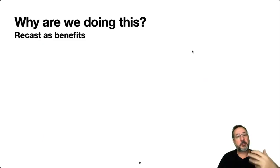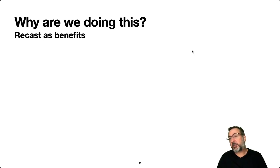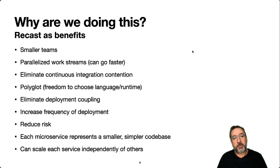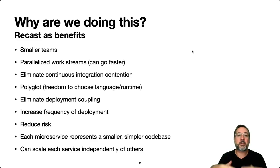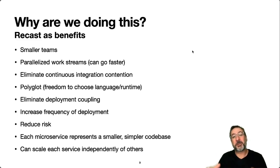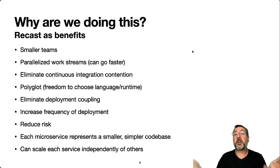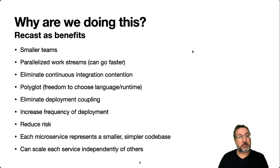Let's pause and consider the benefits gained by transitioning — perhaps using the strangler pattern — from monolith to distributed application. We may reach a point where smaller teams work on separate, smaller codebases, allowing us to parallelize workstreams better. Our velocity comes back up, we eliminate CI contention, gain more flexibility, become polyglot, and can choose different tools and languages for different tasks. We eliminate deployment coupling, reduce risk, increase high availability, and can deploy each service independently. In general, we've moved to a better place.